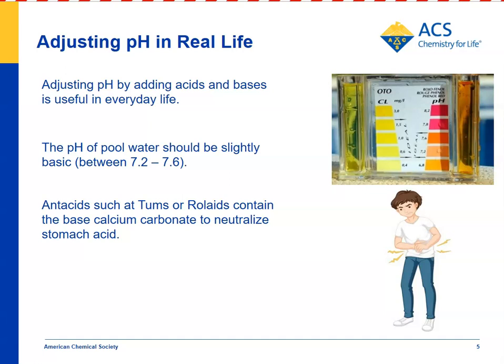In the extend part of the activity, you can show students how pH is used in their everyday life. When pool water is tested, the yellow on the left is a test for chlorine, but the light reddish liquid on the right is a test of pH. Kids can see that the color is supposed to be somewhere between 7.2 and 7.6 on the pH scale. Also, a child with acid stomach can be helped by products like Tums and Rolaids, which both contain calcium carbonate — a base that can help neutralize the stomach acid.